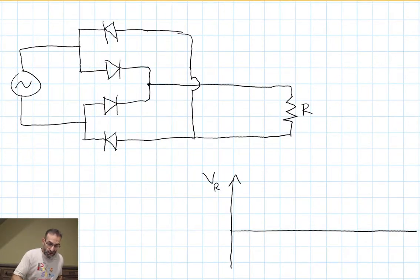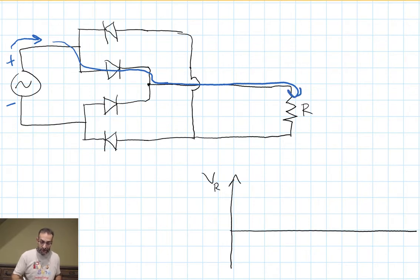Let's take a look at what happens when our source is positive on the top, negative on the bottom. It runs current in this direction, and yet that current can't go through the upper diode. What does it do? It comes through the lower diode, and it can't go backwards through the diode, so it comes this way to our resistor. And then it comes back to the bottom of the power supply.